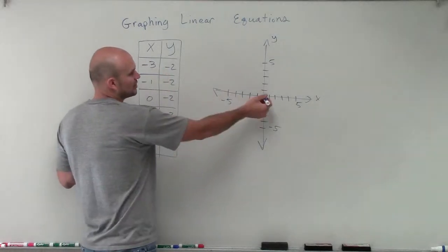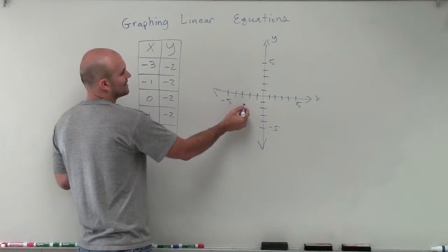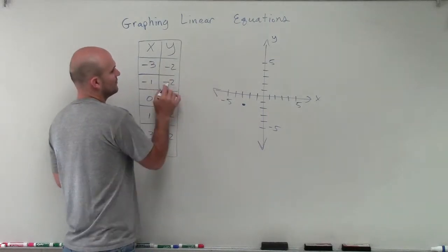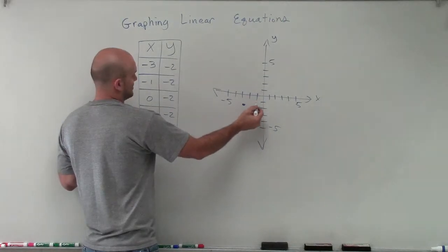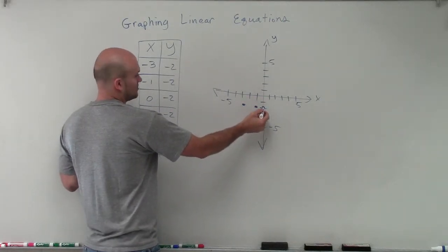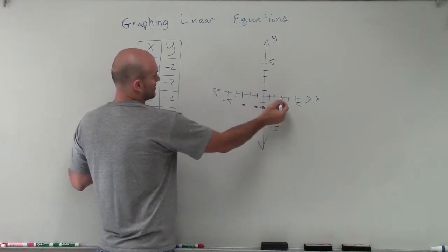So x is negative 3. So I'm going to go to the left, negative 3 on the x-axis. And down negative 2 on the y-axis. For negative 1, negative 2, I'll go over negative 1, down 2, 0, down 2, 1, down 2, and 3, down 2.